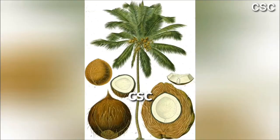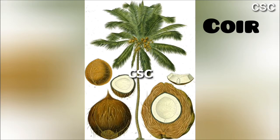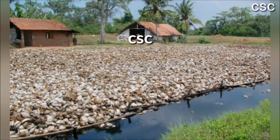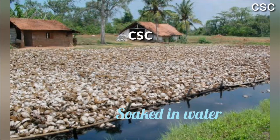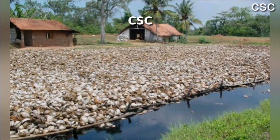Coconut fiber is also called coir. Coir is obtained from the outer shell of the coconut. It is brown in color and coarse to touch. Coconuts are kept in water for a few months to remove the husk from the nut.